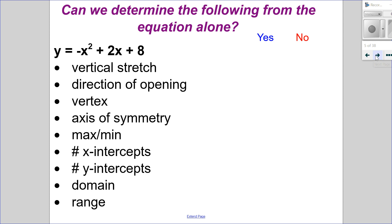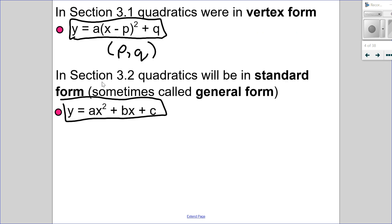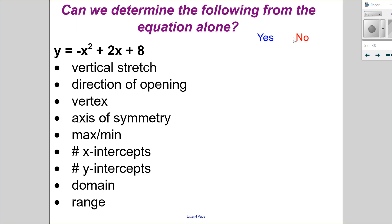I want to know if we can determine the following from just the equation alone. Looking at this equation, can I determine the vertical stretch? The vertical stretch is the a value, and it's the same a value as in vertex form, so I can definitely tell the vertical stretch. I can also tell the direction of opening — if a is negative, it opens down. However, I can't see the vertex, which is a big problem. Since I can't see the vertex, I don't know the axis of symmetry.